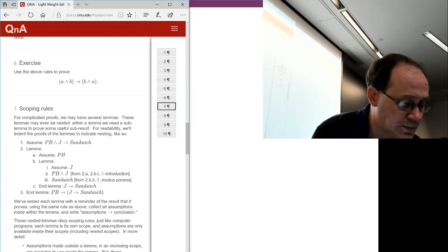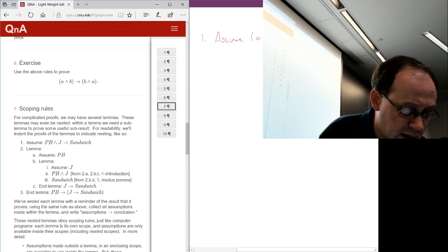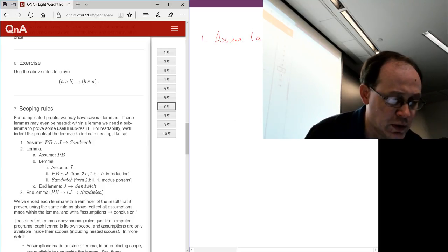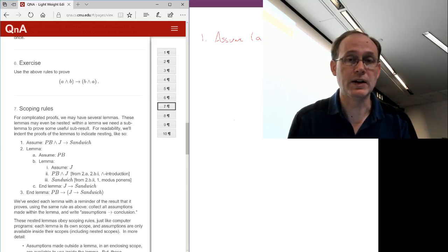So what we're going to do is we're going to start by one assuming A and B. The first step in any proof is to assume the things on the left-hand side of the implication.